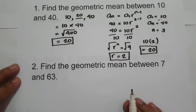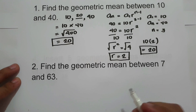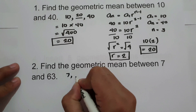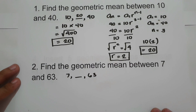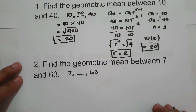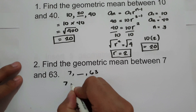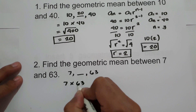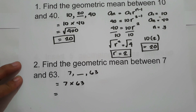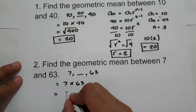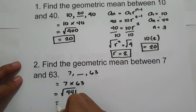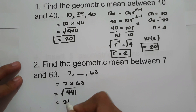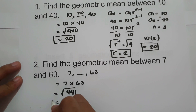For number 2, find the geometric mean between 7 and 63. We write the given as 7 and 63, inserting one geometric mean between them. First, multiply 7 and 63: 7 times 63 equals 441. Then get the square root of 441, which is 21. So the geometric mean between 7 and 63 is 21.